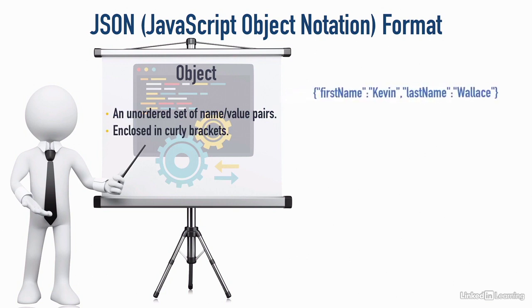Here's an example. Notice we've got in curly brackets a couple of name-value pairs. We've got a name of first name, and notice it's in quotes because it's a string. There's a colon separator, and we've got Kevin, another string, so it's in quotes. That's the value. The value of first name is Kevin.